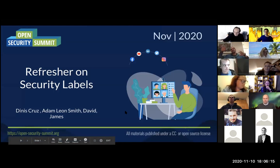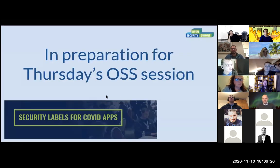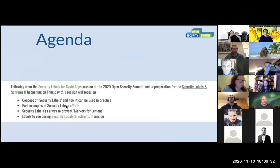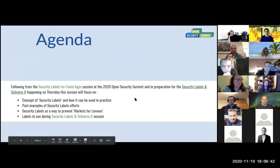It's quite interesting because we actually have a nice cross balance here. Everyone else, if you have ideas, put them in the chat or chip in. Let's quickly take a look — this is the session we're going to have on Thursday: security labels and SHRIMP too. This is the example we want to go through today.